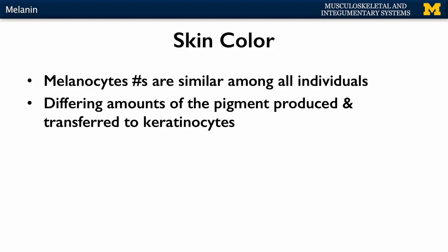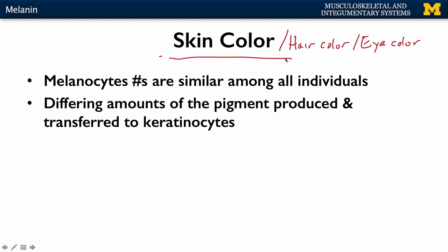In terms of skin color — the same factors also affect hair color and eye color. The melanocyte number, the actual cell count, is not very different among individuals. What plays a role in the observable differences in skin color, hair color, and eye color is the differing amounts of pigment produced, the different types of melanin pigments produced, and how much is transferred to keratinocytes.